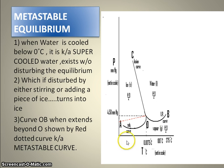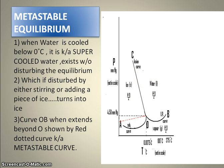Furthermore, curve OB extends towards point A. This extended portion is known as the metastable curve, because we cannot disturb the water present in supercooled liquid form — if it is disturbed, it immediately changes into ice. This supercooled water is found at temperatures below 0°C.